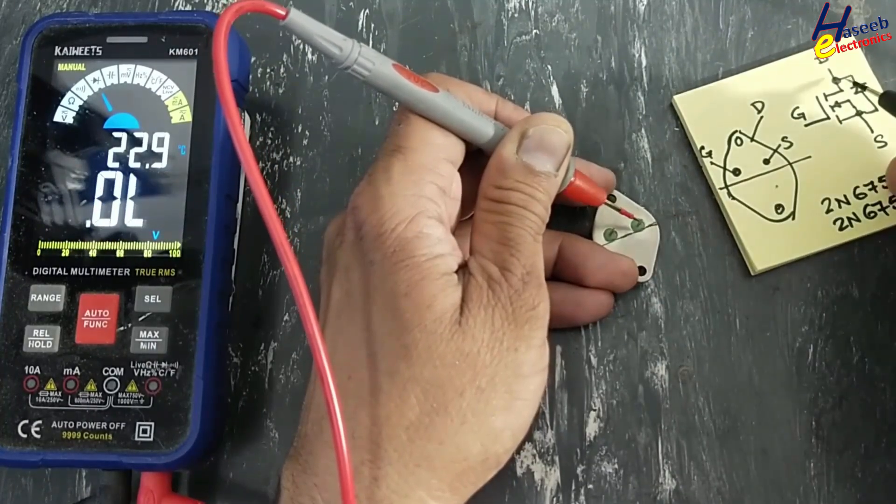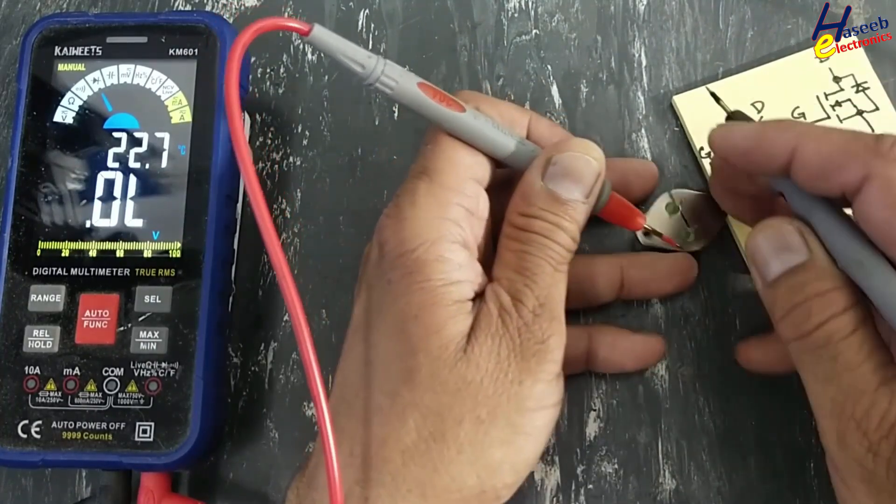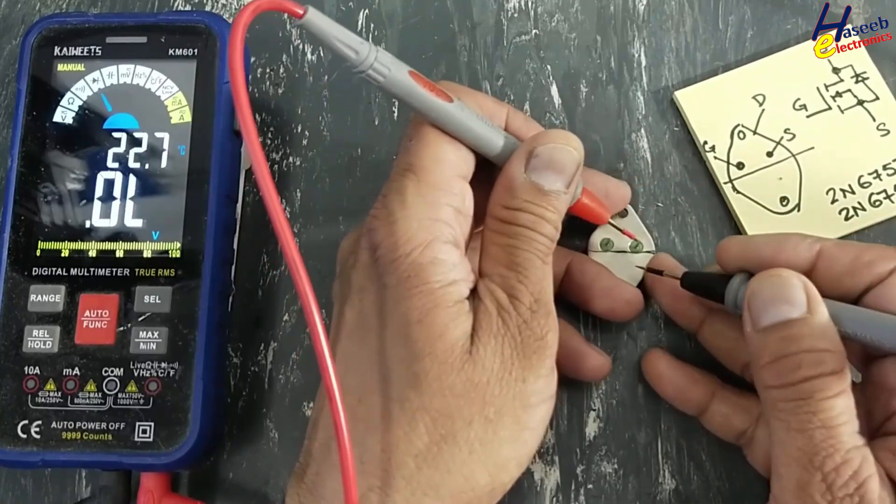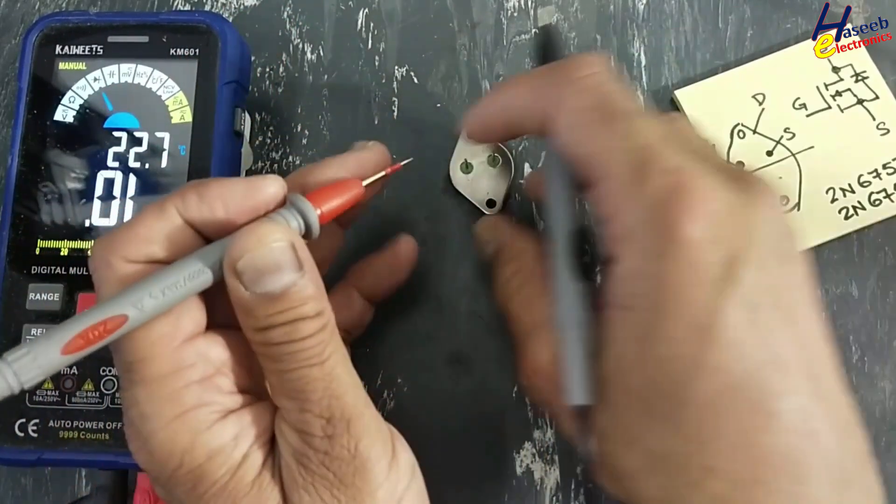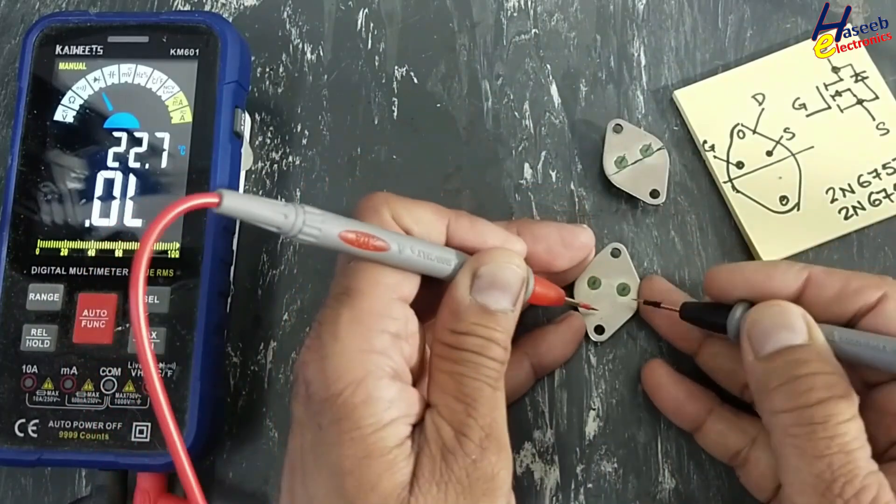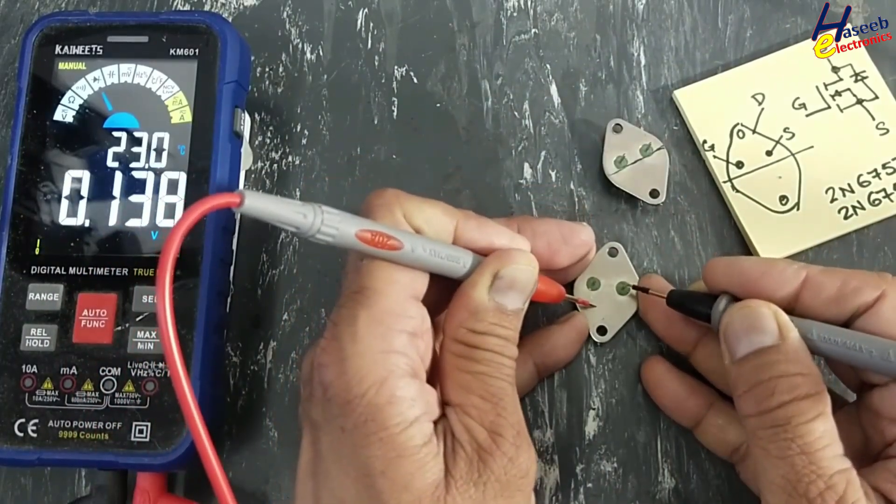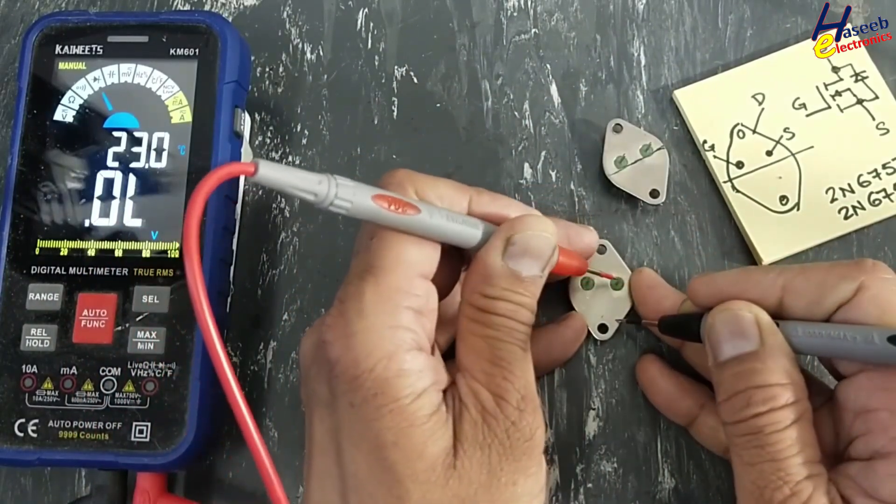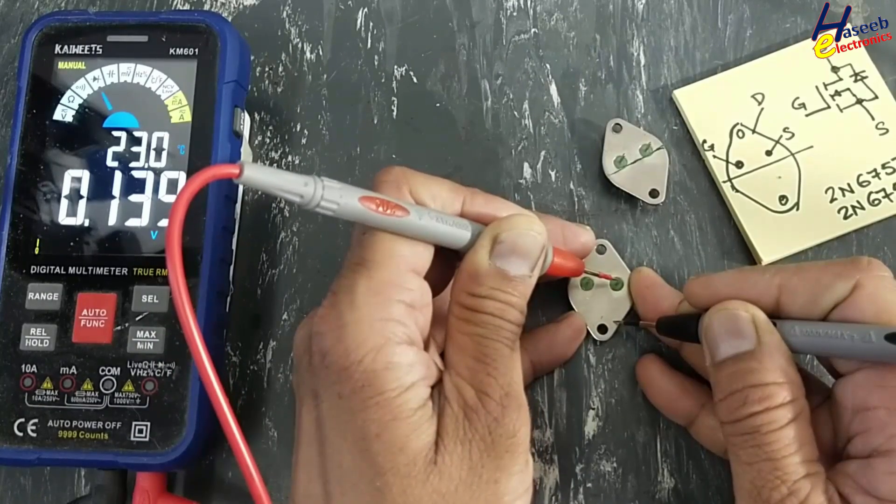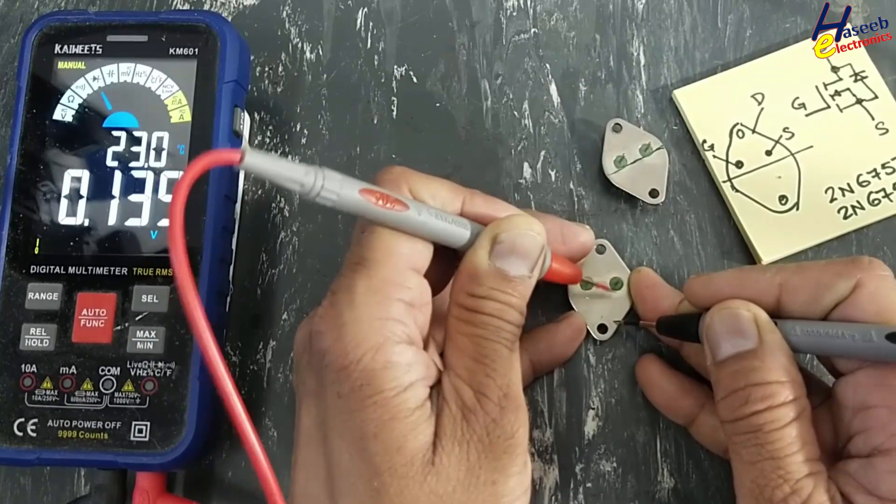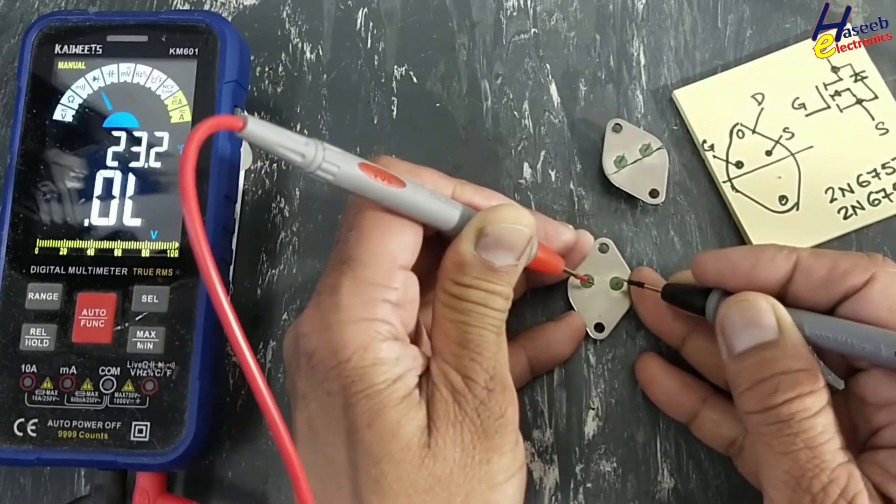Now the gate is discharged, open circuit. Now the diode is in circuit. Same way, if you check this one, it shows 0.138, 0.14. If you charge it, it will not change the reading.